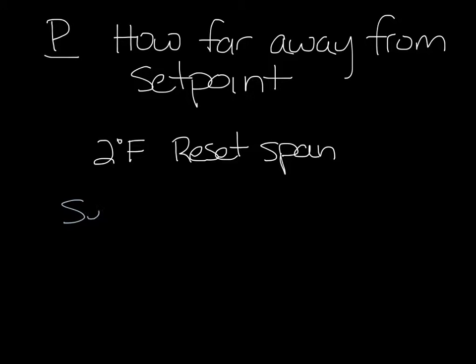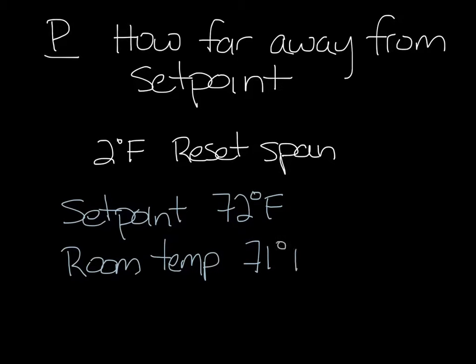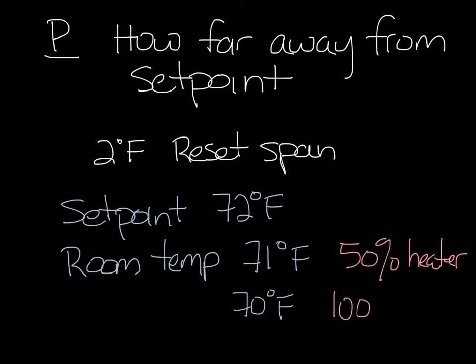So if the setpoint is 72 degrees, but the room temperature is 71, 50% of the heater capacity will be energized by the controls. If the room temperature dropped to 70 degrees, the controller would respond with 100% heater capacity. How much the heater is energized is proportional to how far away from setpoint you are.